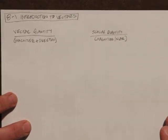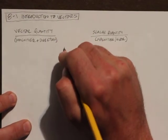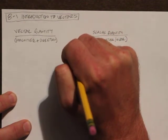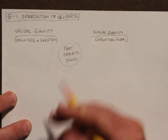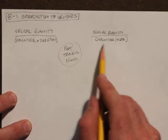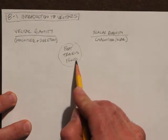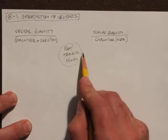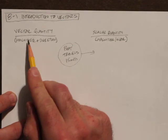Let's do some examples to figure out what we're talking about. A boat travels 15 miles per hour. We have to decide: is this a vector quantity or a scalar quantity? Notice we're talking about a boat traveling 15 miles per hour — do we know what direction the boat is going? No, we don't. So this is a scalar quantity.